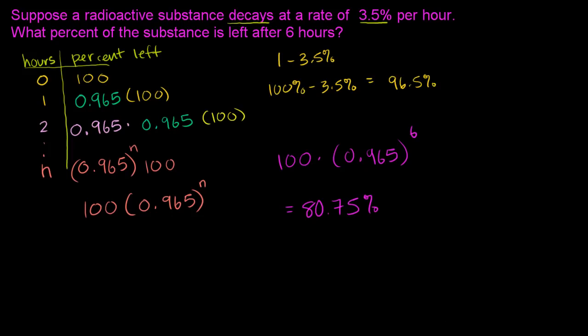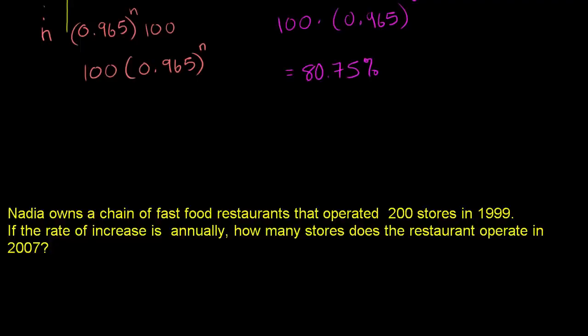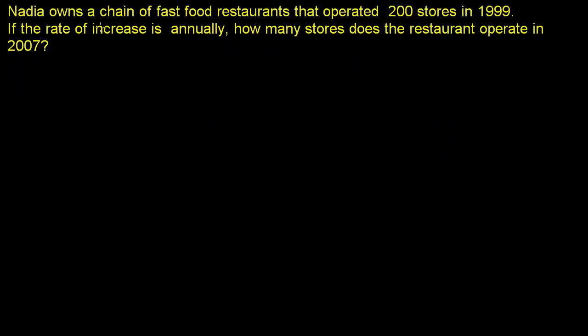Let's do another one of these. So we have Nadia owns a chain of fast food restaurants that operated 200 stores in 1999. If the rate of increase is, oh, actually, there's a typo here. It should be 8%. The rate of increase is 8% annually.